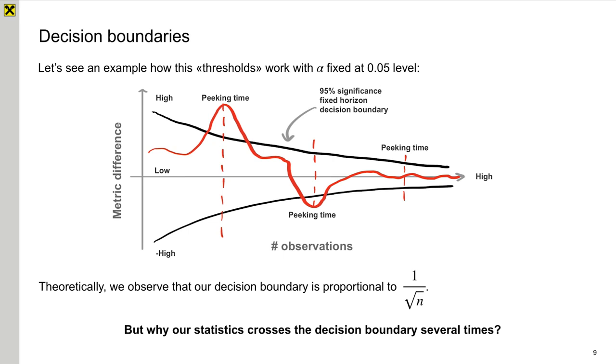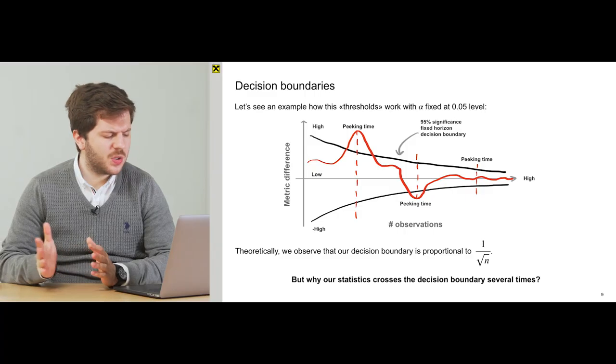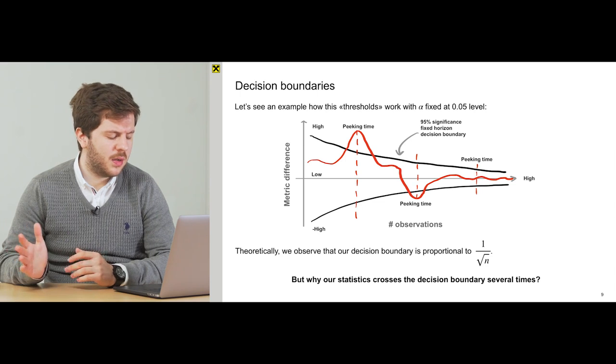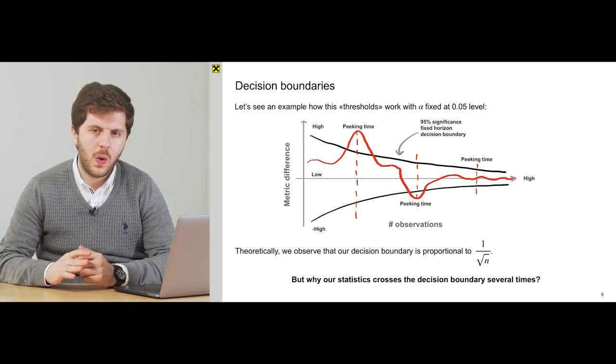We see that there are two black lines which represent our fixed horizon decision boundary. The red line, which shows the effect by we obtain some number of observations. And if we look precisely, we will see that sometimes our effect crosses our decision boundary. And if we pick it this time, the test will say that the effect exists, even if we see that in the end our A-B test showed us that the null hypothesis is true. So why our statistics cross this decision boundary several times? Why does it happen?